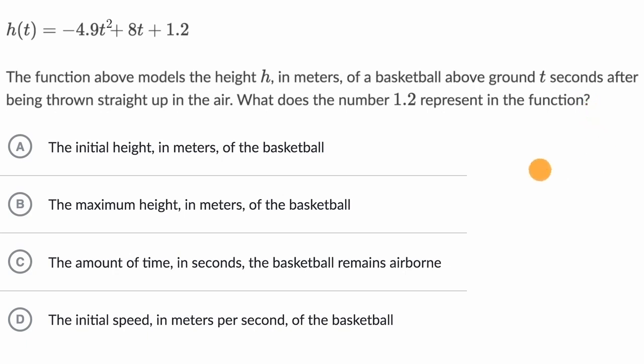All right, so we could just visualize what's happening when you throw a basketball straight up in the air. This is the ground. Let's say this is the person throwing the basketball. This is the basketball.